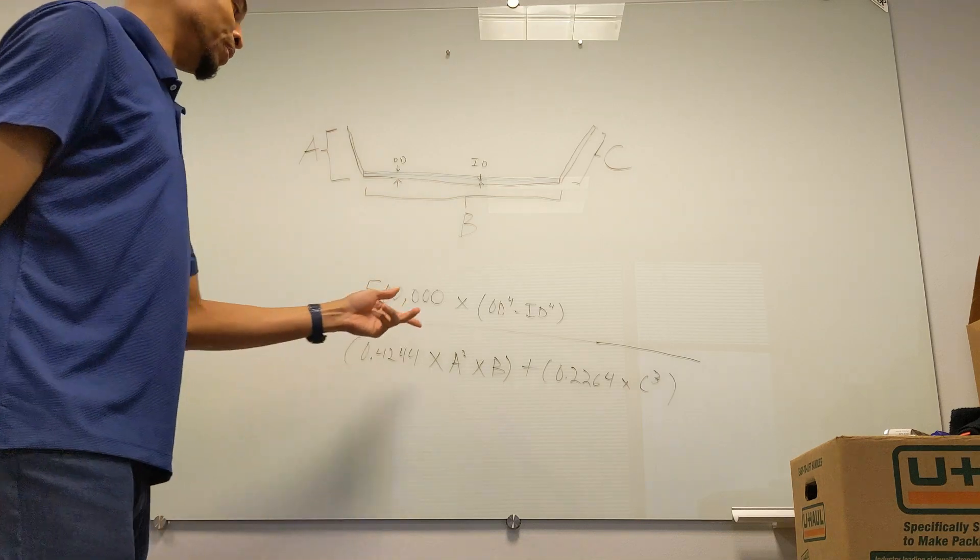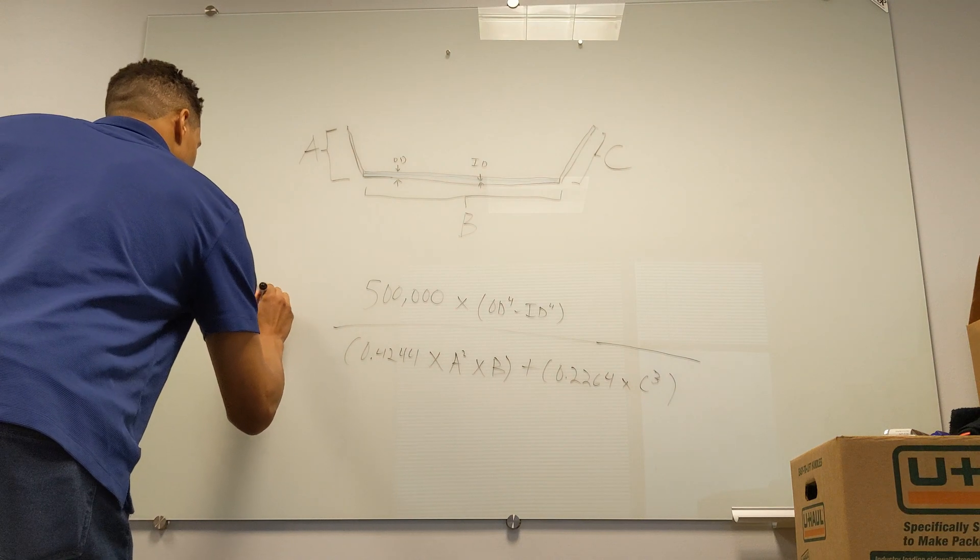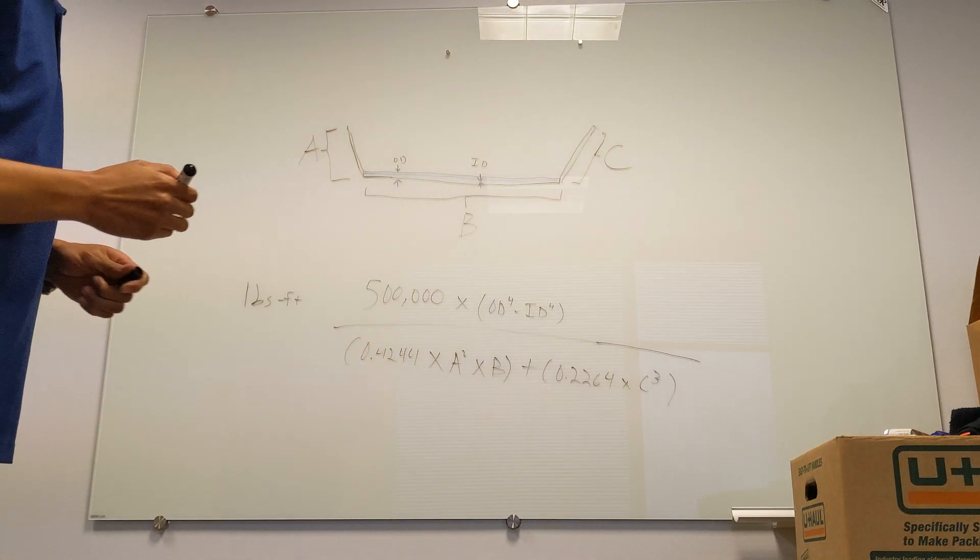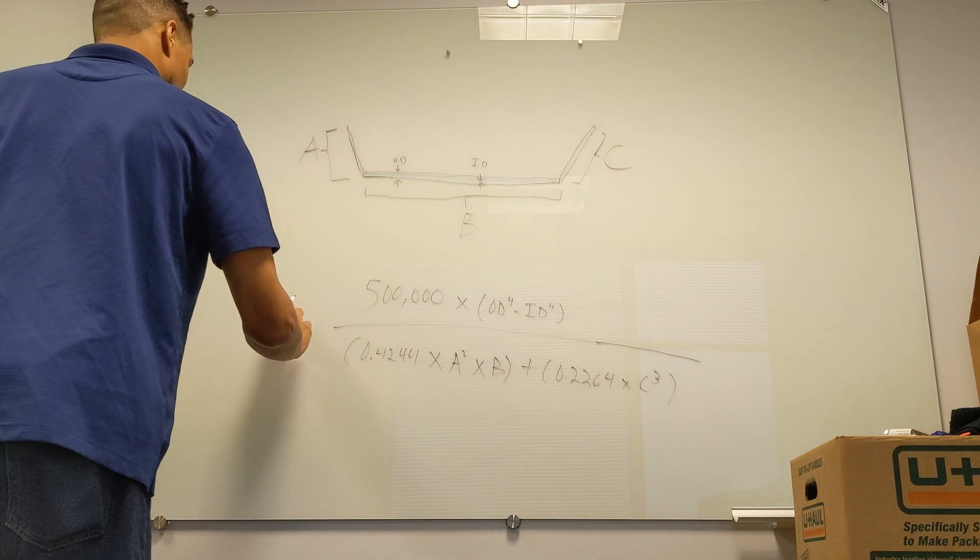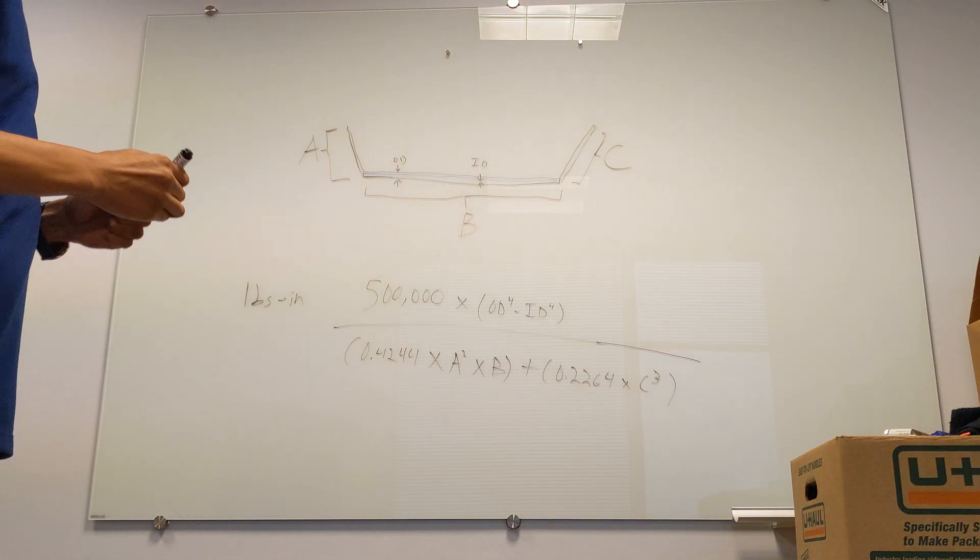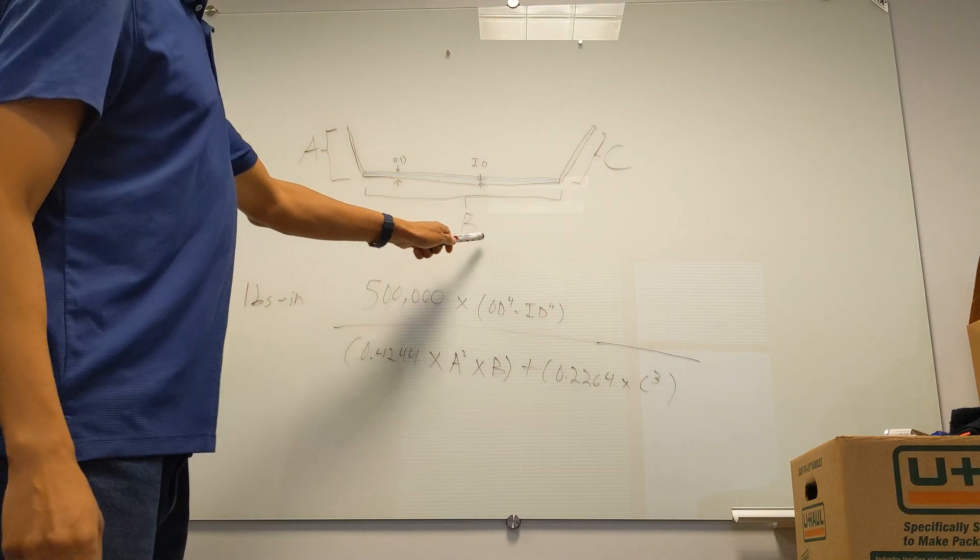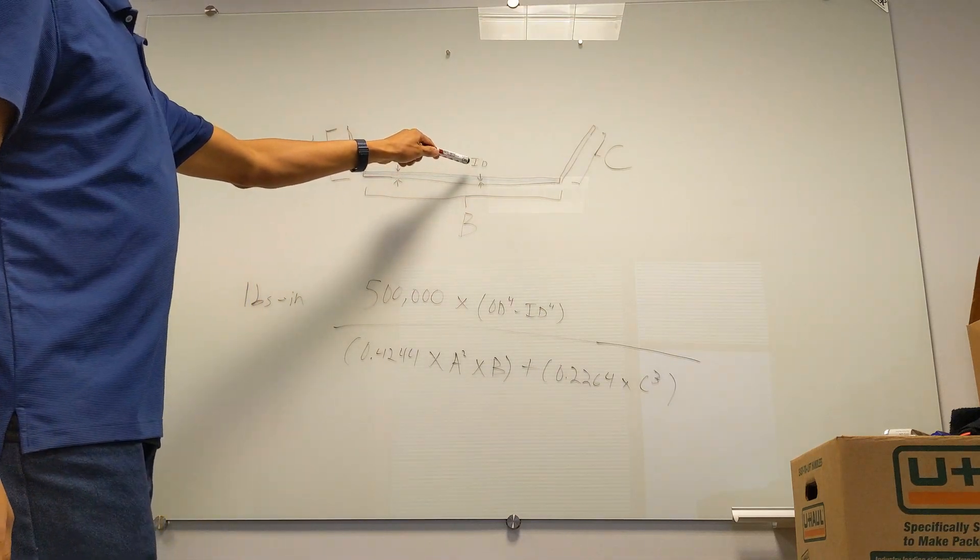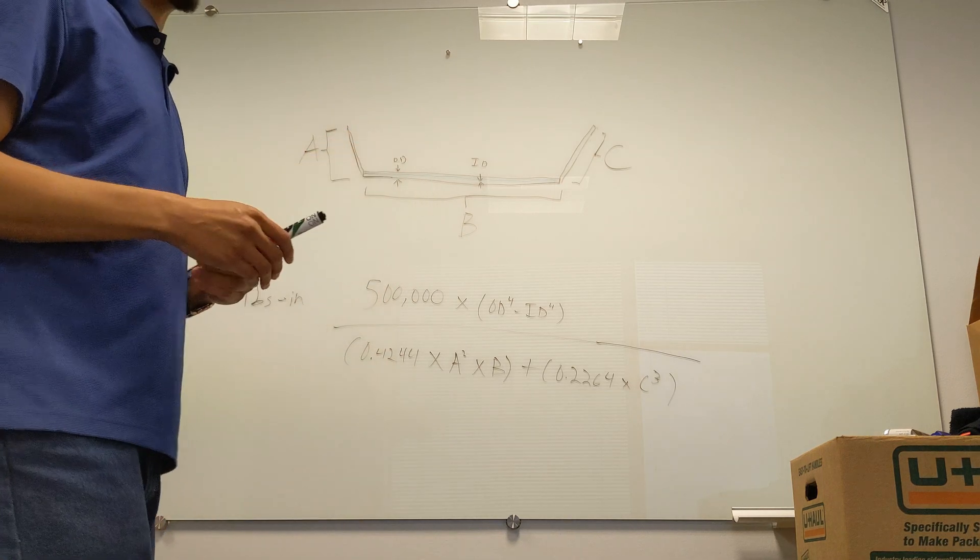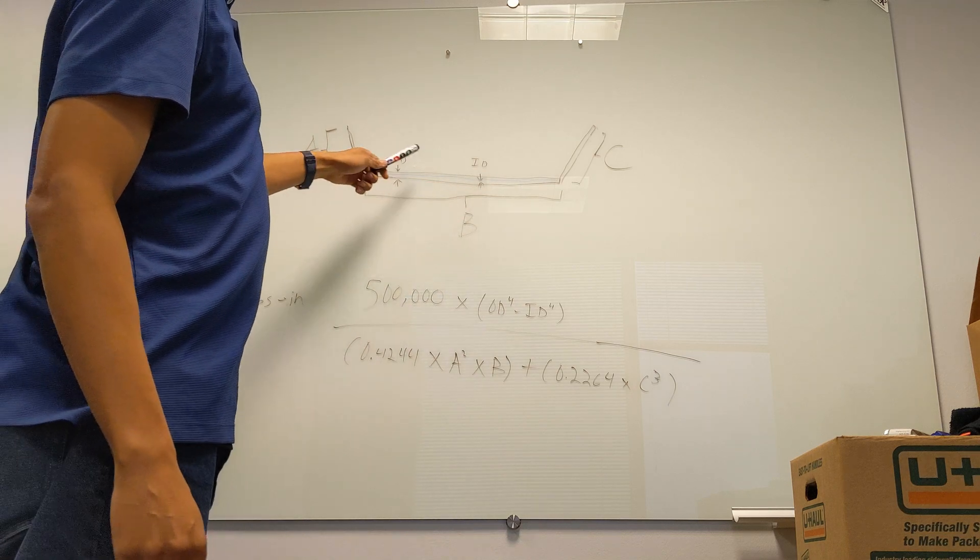So this is a formula I found online that could help you calculate the pound-foot of torque, or actually pound-inch—sorry, this is going to be in inches, but you can convert that. Basically you'll get the measurement between B and C, and then you'll get the inner diameter.